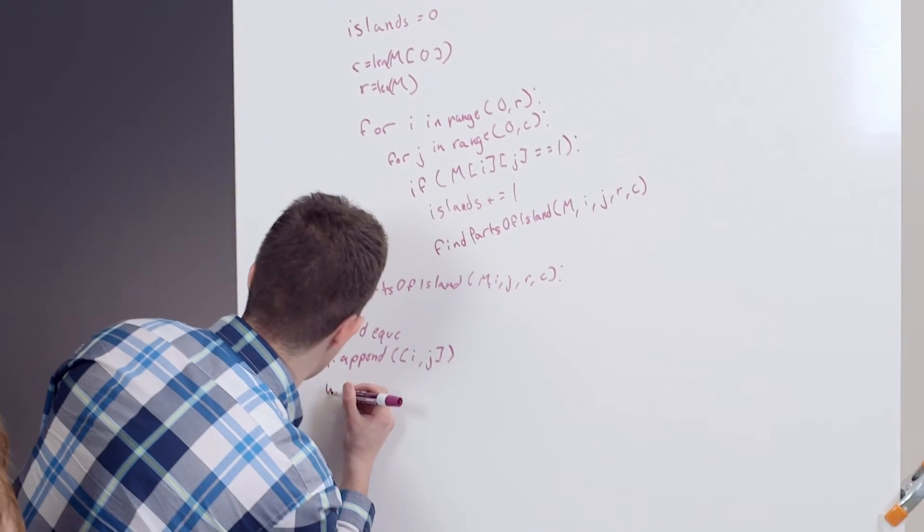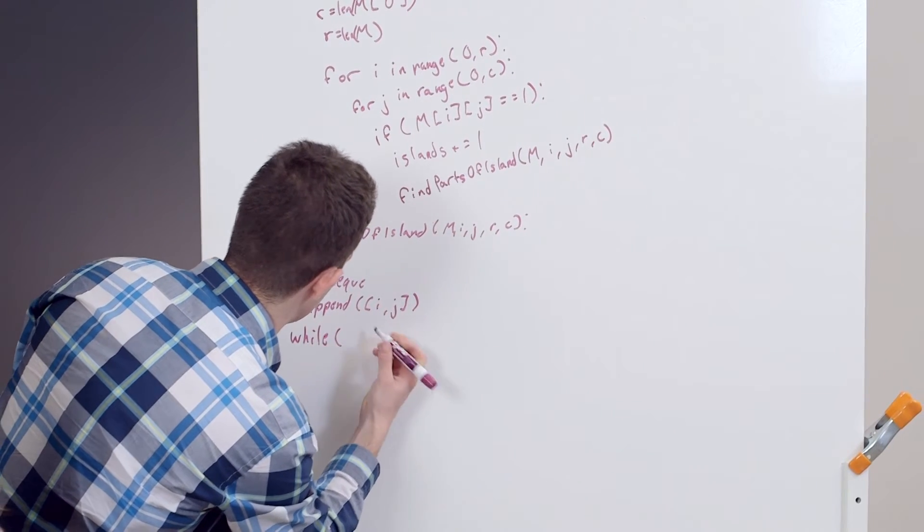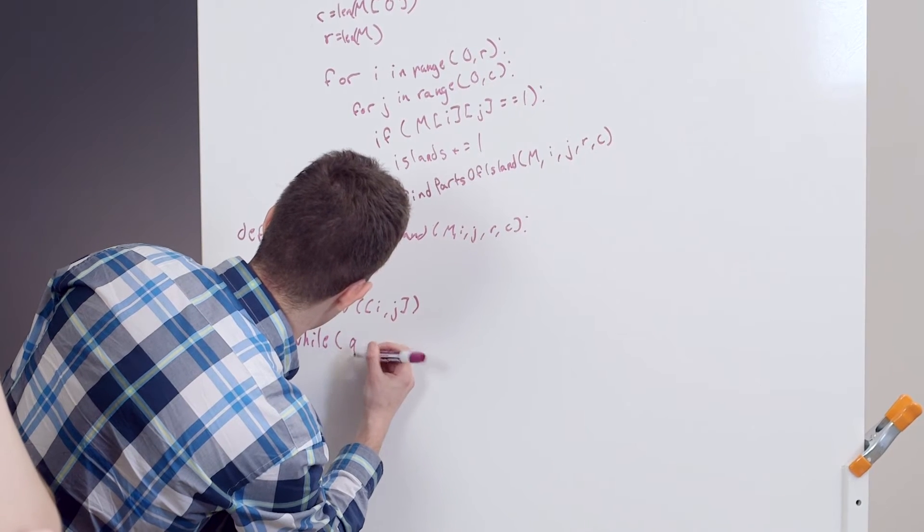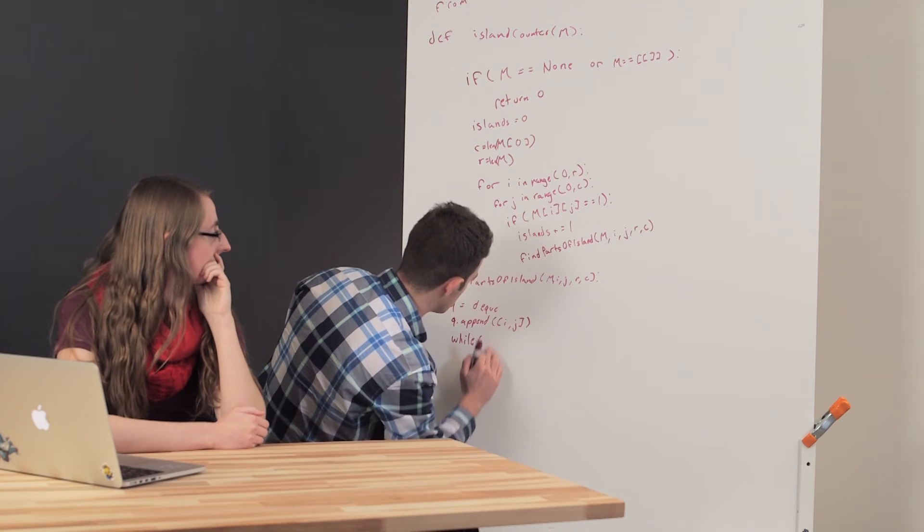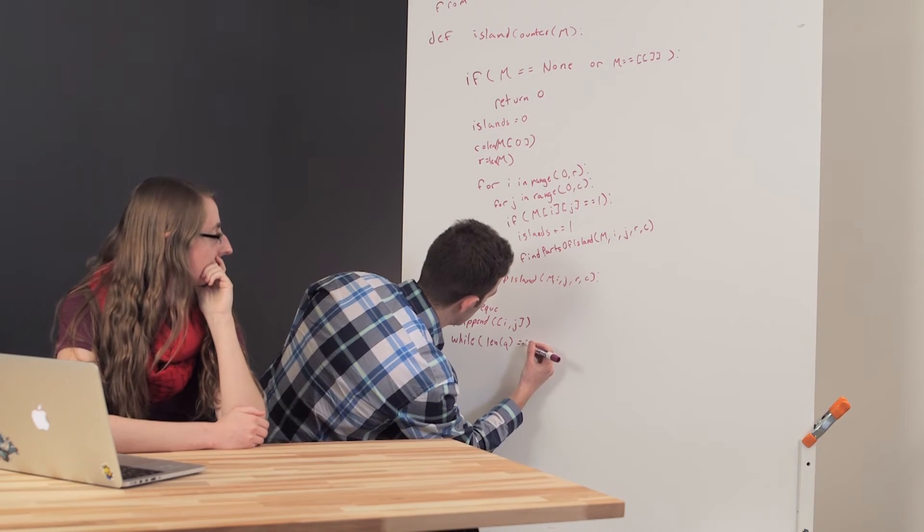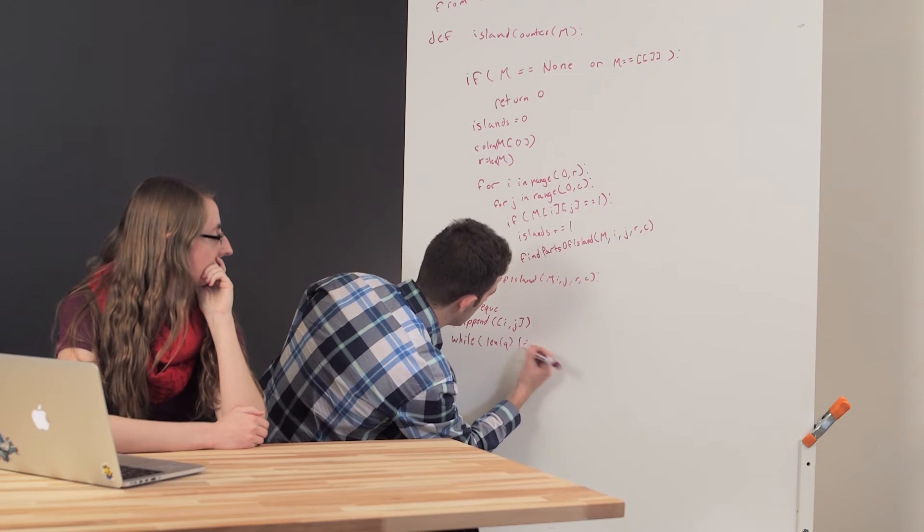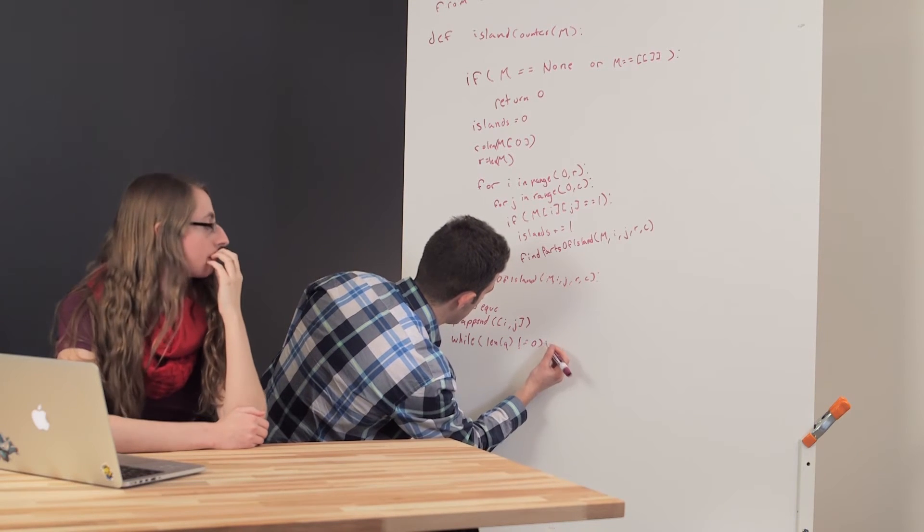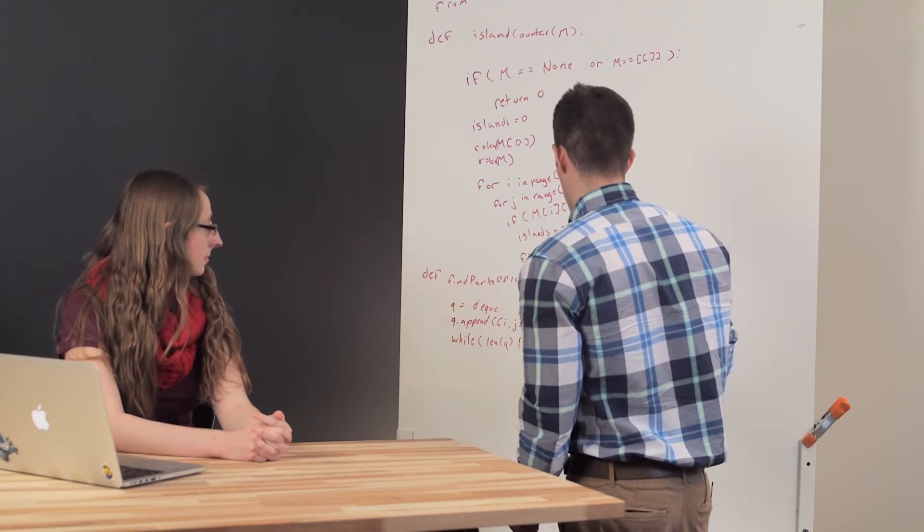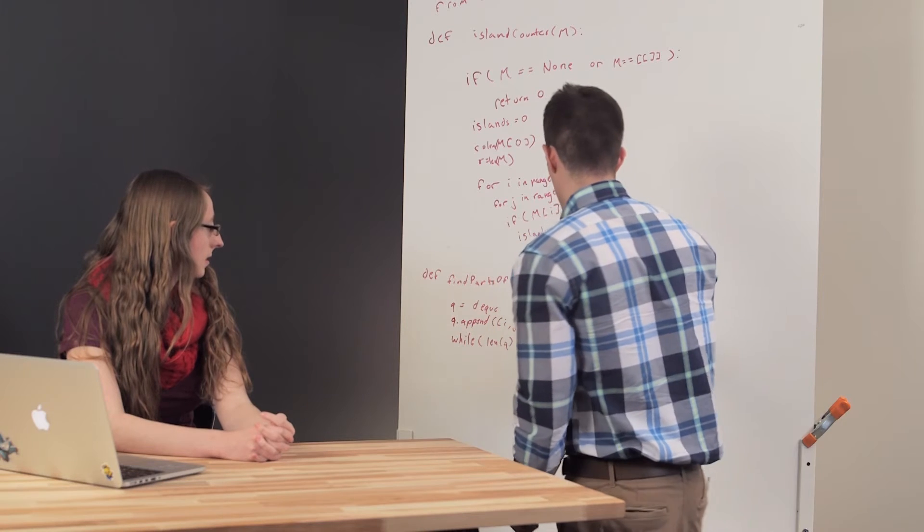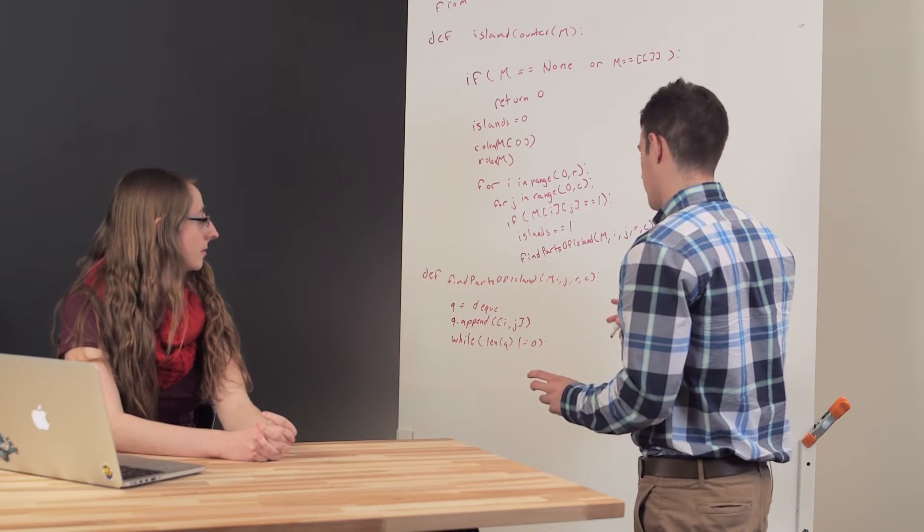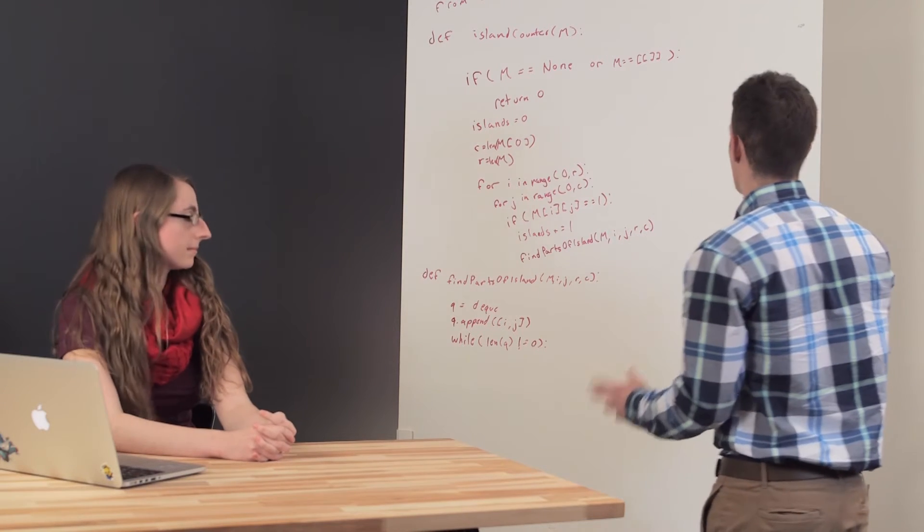And now I'm just doing the breadth-first search here. So while it's not empty, I'm going to keep searching for other things around. So while the length of the queue does not equal 0. So what I want to do here is I want to look at the elements around it. So we mentioned before that I needed to check if they were actually there. So I'm going to write a helper method to do that too.